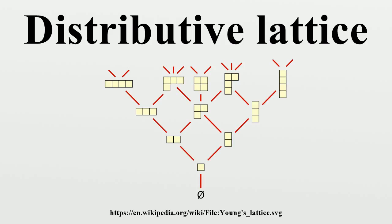A lattice is distributive if the following additional identity holds for all X, Y, and Z in L. Viewing lattices as partially ordered sets, this says that the meet operation preserves non-empty finite joins. It is a basic fact of lattice theory that the above condition is equivalent to its dual, for all X, Y, and Z in L.